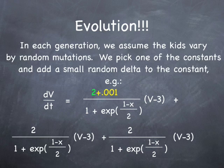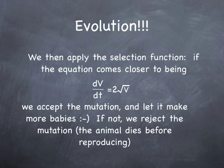And then every generation, what we'll do is we'll pick one of the constants and we'll mutate it by just a little bit, add a random delta to the function. And then we'll apply a selection function to it. If the equation becomes closer to being equal to our target equation, we'll accept the mutation, and we'll let it make more babies. If not, we reject the mutation. So basically what we're trying to do is we're trying to simulate this. We're trying to show that this neuron can evolve by using natural selection.